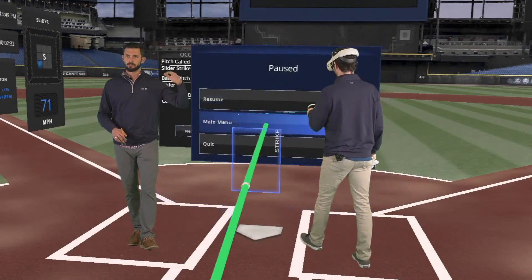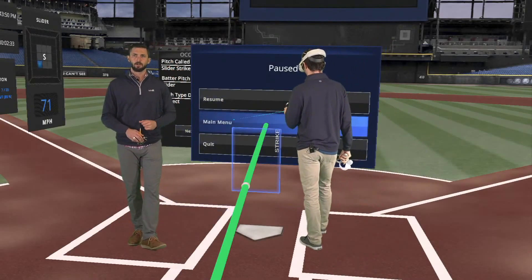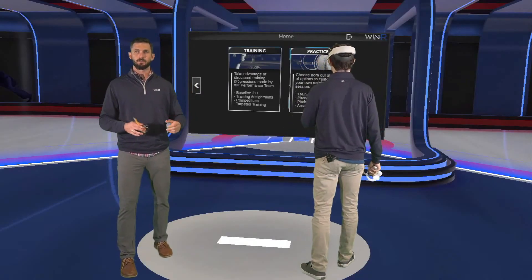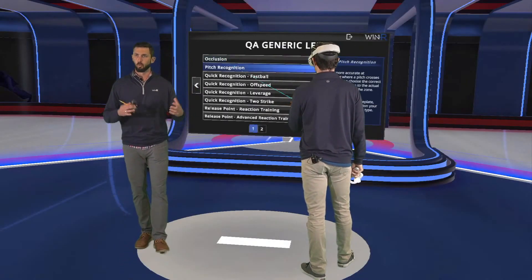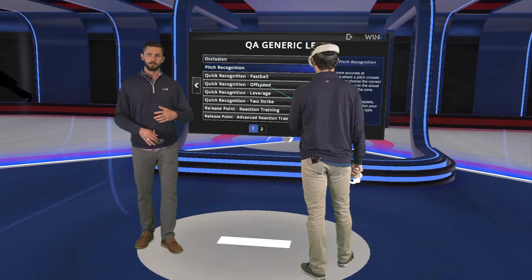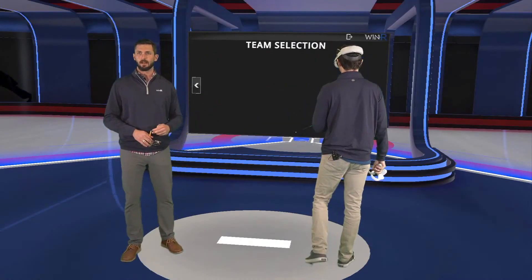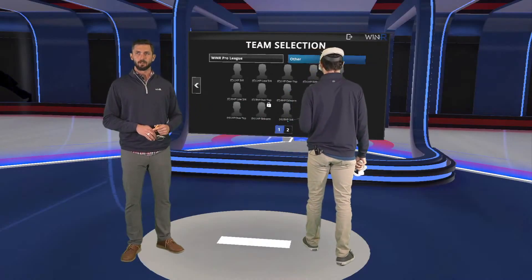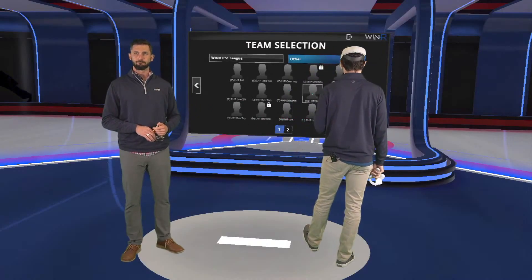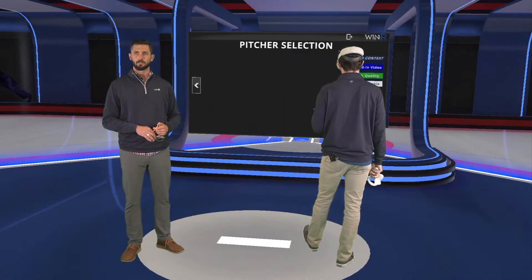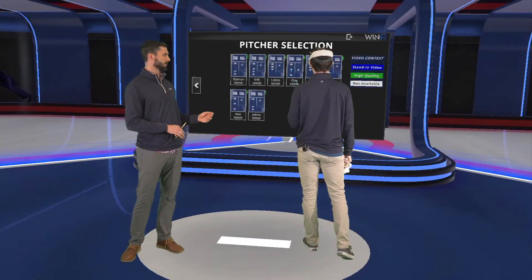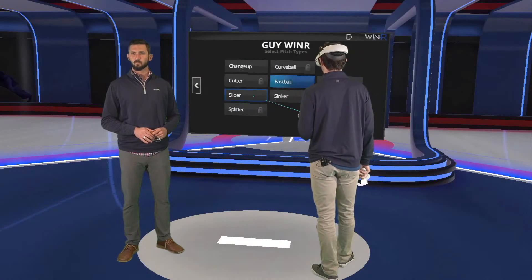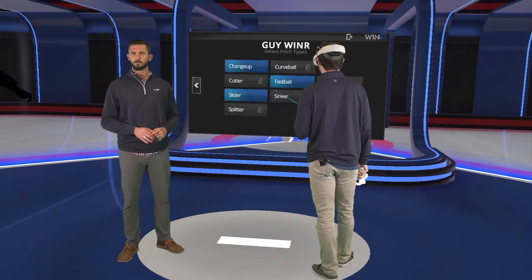This is occlusion mode. We like to start here, really training the eyes — keep it simple. This is very hands-off, low workload. There are no physical constraints, and it's not exhausting mentally. It may be a little bit, but guys that are injured sitting at home — great way to get a ton of work in for pitch recognition. We're going to go into the lefty three-quarters and choose all of the pitcher's pitches.